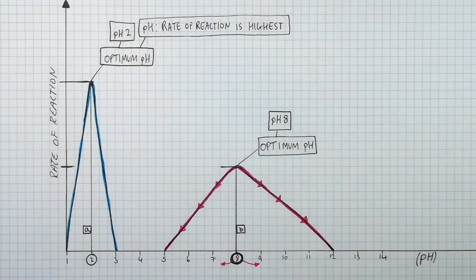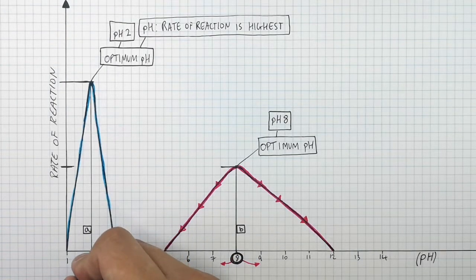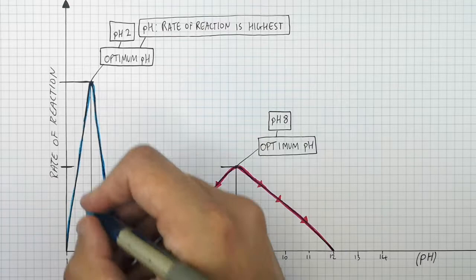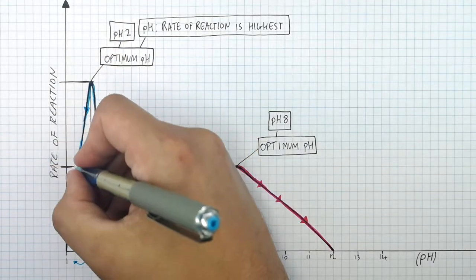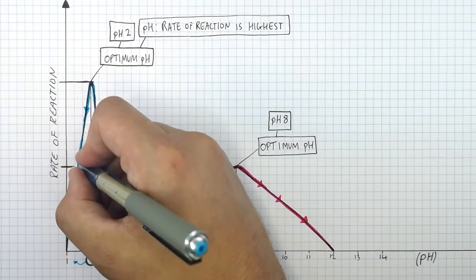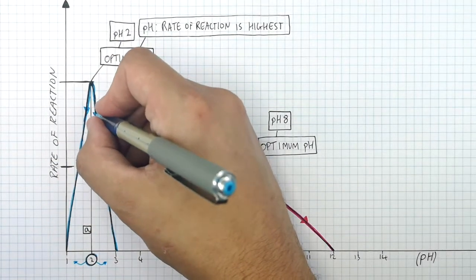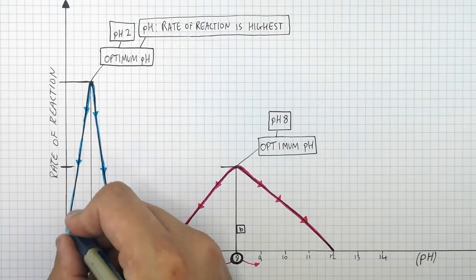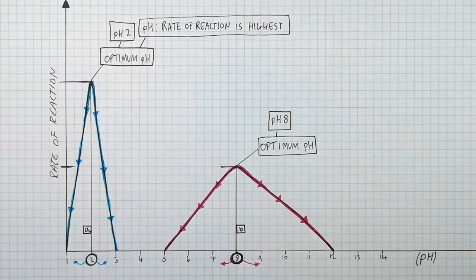If you decrease or increase the pH above or below pH2 for enzyme A, the rate of reaction will decrease. So the rate of reaction decreases for enzyme A if you increase or decrease the pH above or below pH2.